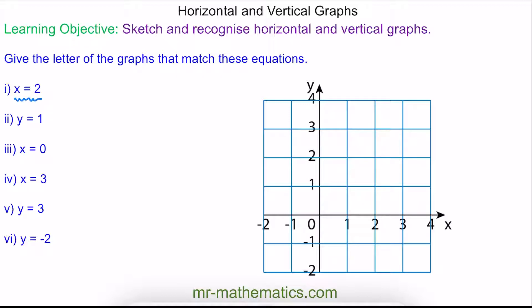A coordinate pair is made up of an x and a y value. For the equation x equals 2, the x value is always 2, although the y value can change. For instance, y could be 0 — that's 2 across and 0 up — which would be here.